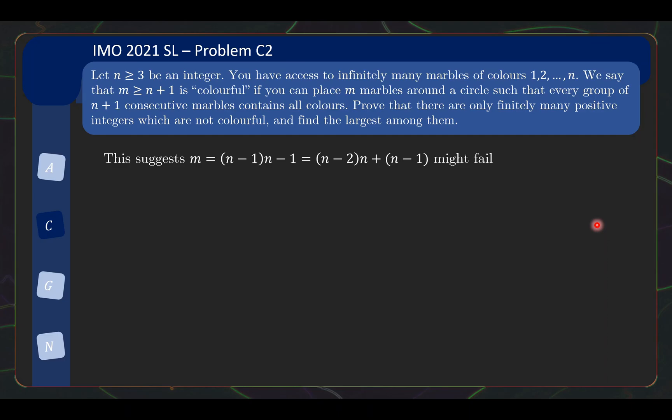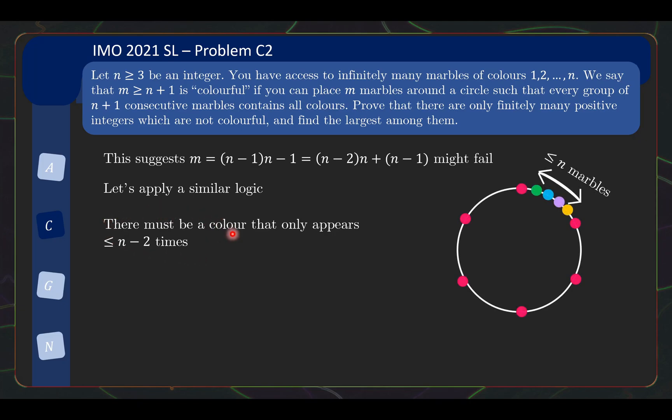So indeed, we can generalize this logic to our general situation as follows. Well, it turns out that by thinking about it, there must be a color that only appears at most n minus 2 times. This is the rare color. Why? Because if every color appears at least n minus 1 times, if n minus 1 times the number of colors, then it will be n minus 1 n, which will already be greater than m. So this situation here must hold. And let's try to take a look at what the construction will look like in such a situation.